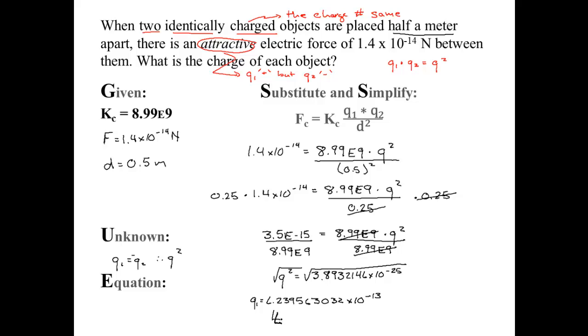So Q1 equals 6.24 times 10 to the negative 13 coulombs. But that means that Q2 equals negative 6.24 times 10 to the negative 13. Now you can use the E notation if you want as well.